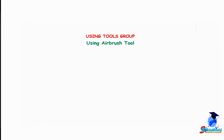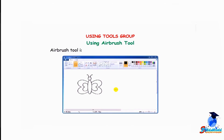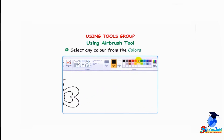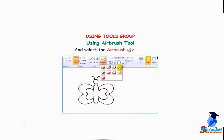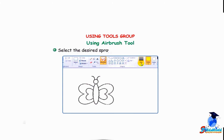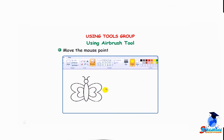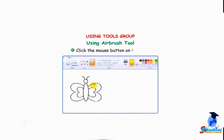Using the airbrush tool: the airbrush tool is used to spray color on the drawing area. Select any color from the colors group. Click on the brush's drop-down arrow and select the airbrush option. Select the desired spray size from the size button. Move the mouse pointer onto the drawing area and click the mouse button on the area where you want to spray the color.